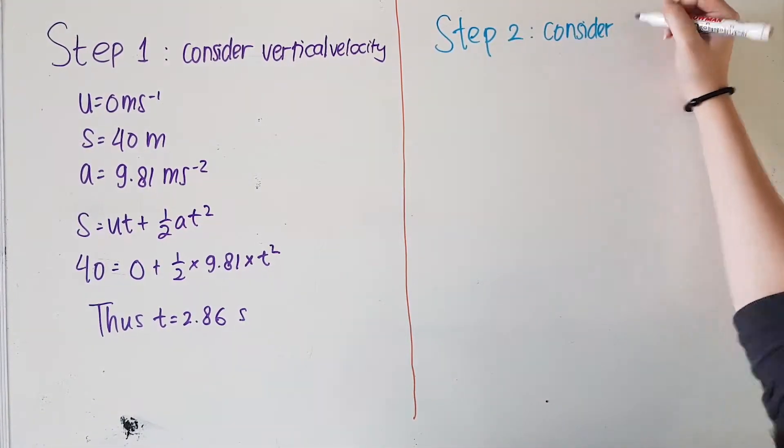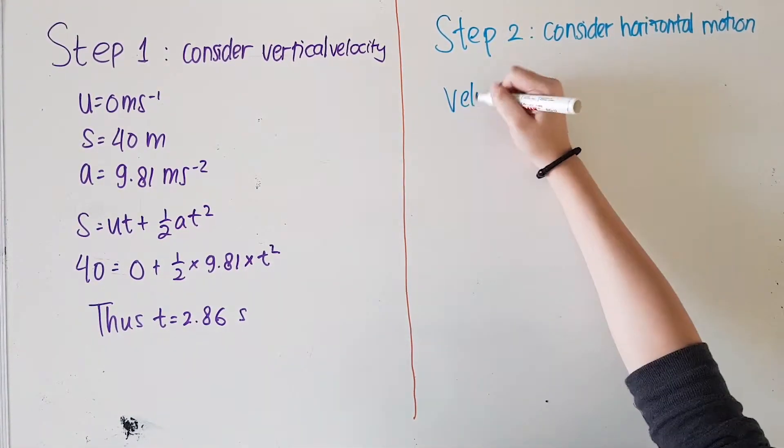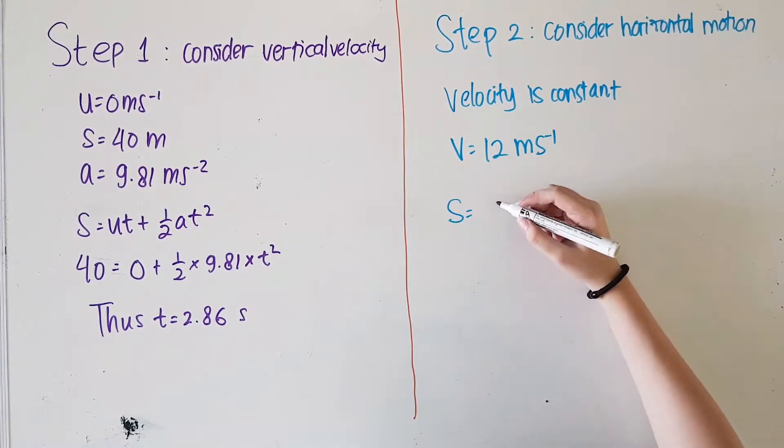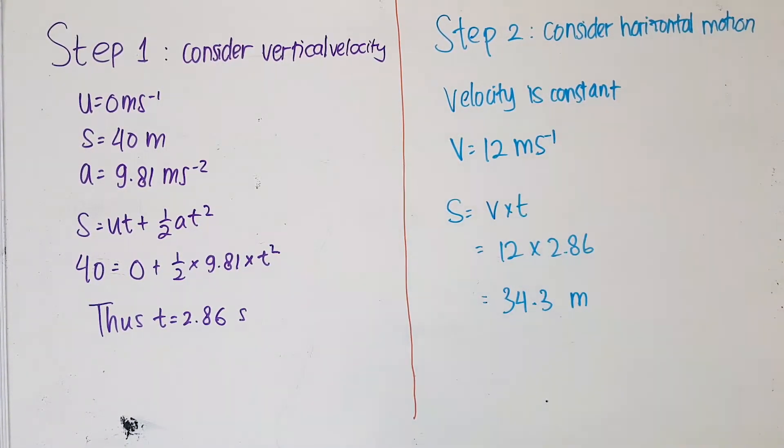Now that we've found the time taken, we can calculate how far will the stone land from the base of the cliff by using the formula distance equals velocity multiply by time. Since the velocity is constant at 12 meters per second, and time is 2.86 second, we'll find that the stone will land 34.3 meters from the base of the cliff.